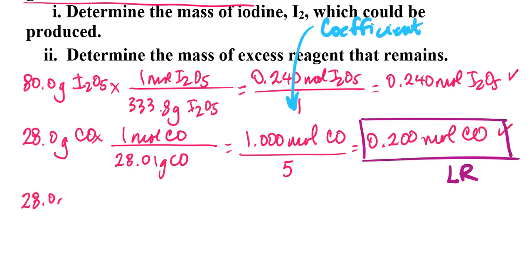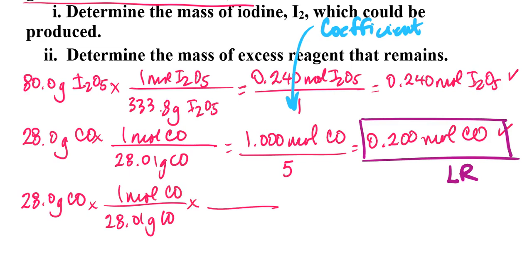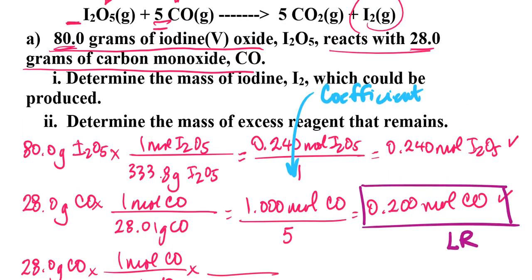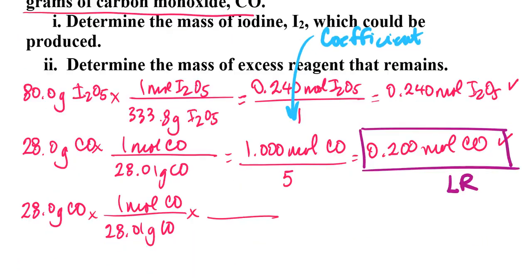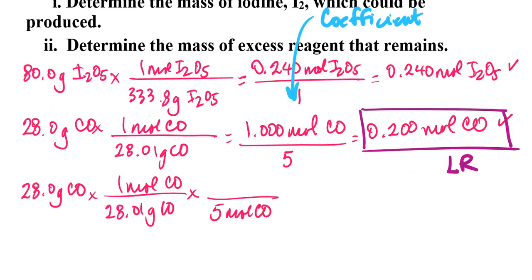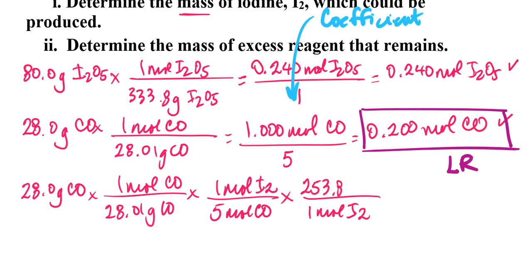I usually favor starting from the mass that was given. So, 28 grams of carbon monoxide. I'm going to set up the stoichiometric calculation and include my mole ratio. For every 5 moles of carbon monoxide, I form 1 mole of iodine — so 5 moles of carbon monoxide for every 1 mole of iodine. They wanted a mass, so I'm going to convert moles of iodine to grams of iodine. The molar mass of iodine is 253.8 grams, so that means I'm going to form 50.7 grams of iodine.